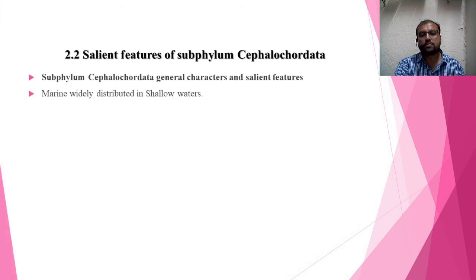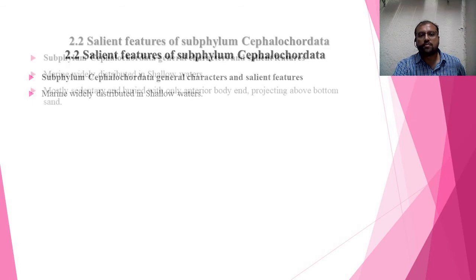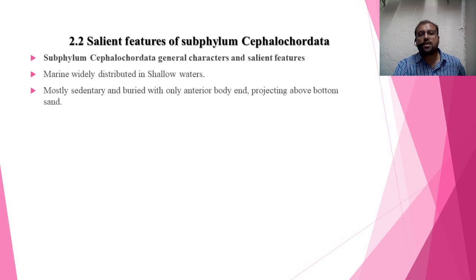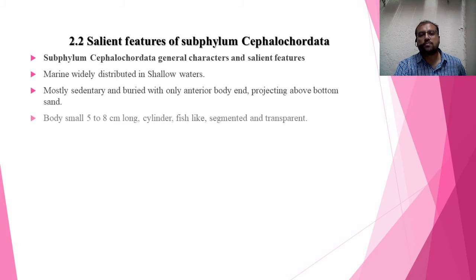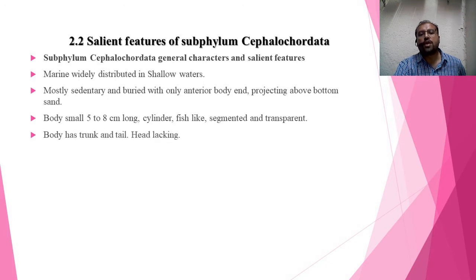Cephalochordates are marine, widely distributed in shallow waters, mostly sedentary and buried with only the anterior body end projecting above the bottom sand for feeding, while the rest of the body is under the sand. They are smaller in size, measuring five to eight centimeters long. They have a cylindrical, fish-like, segmented and transparent body with a trunk and tail.